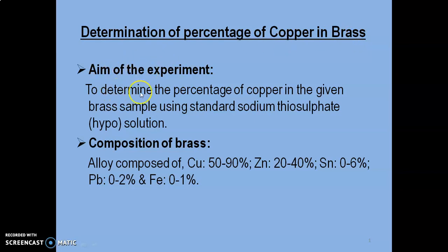Aim of the experiment: to determine the percentage of copper in the given brass sample using standard sodium thiosulfate or hypo solution. First, composition of brass - an alloy composed of copper in major along with zinc, tin, lead, and iron.